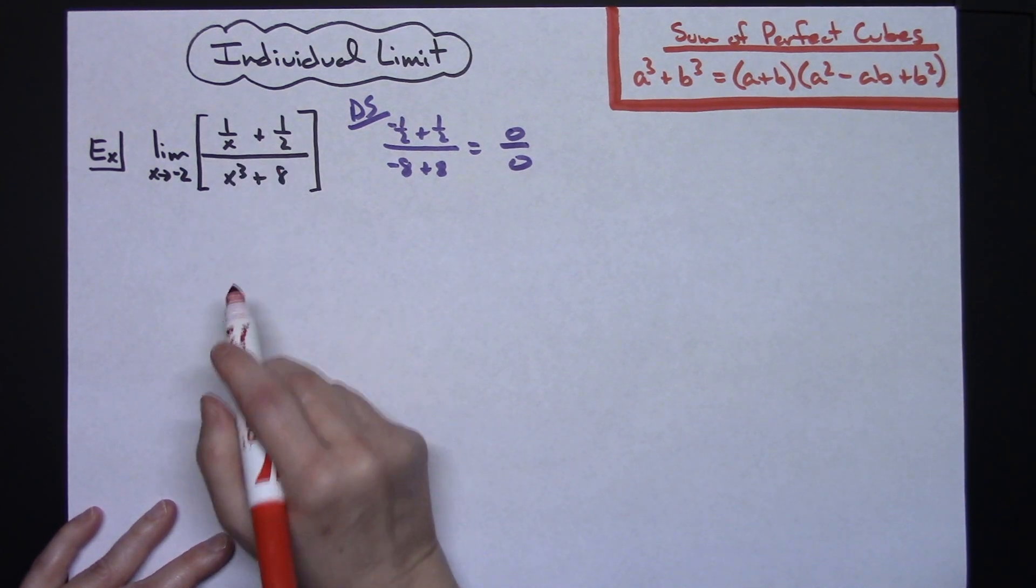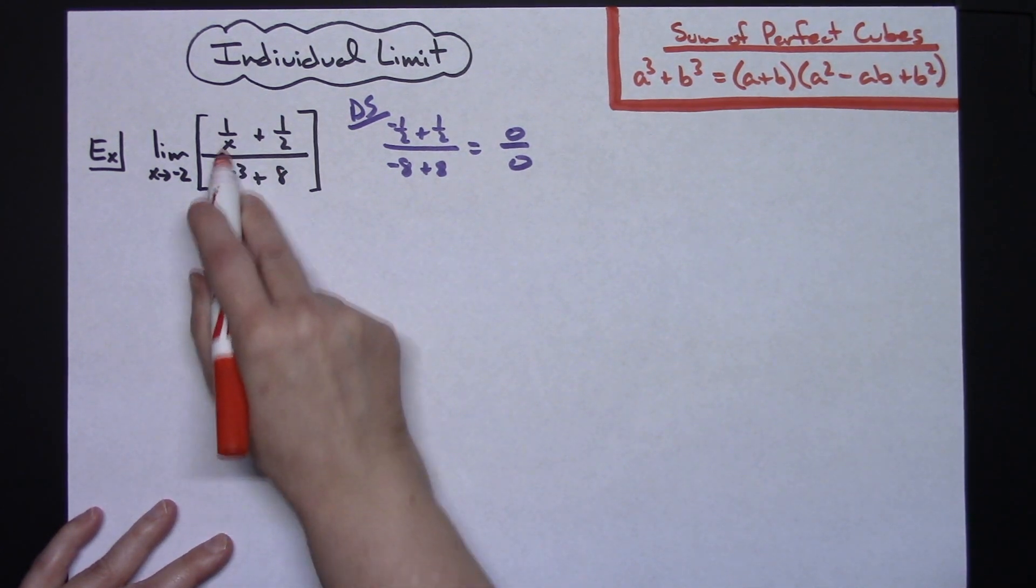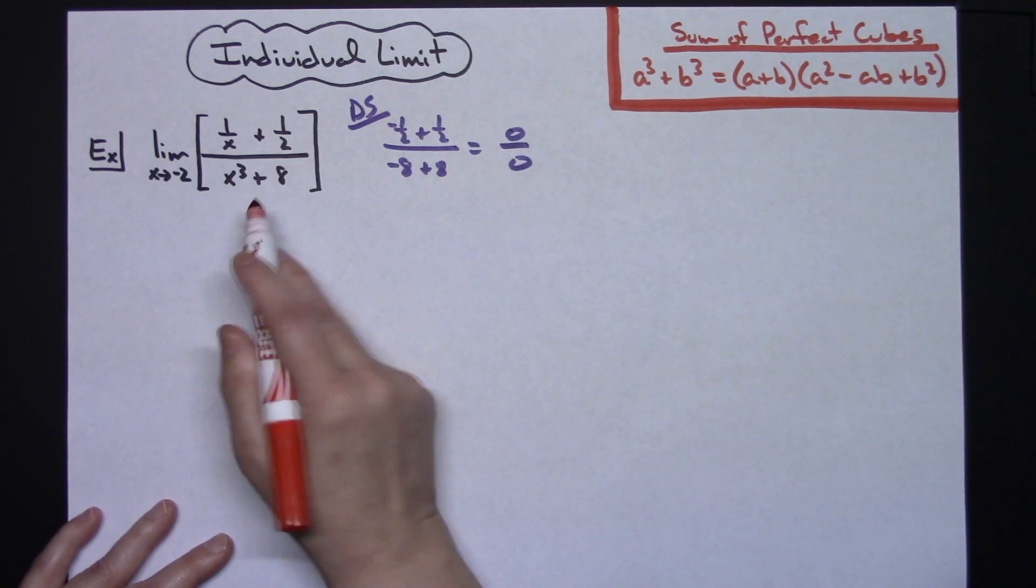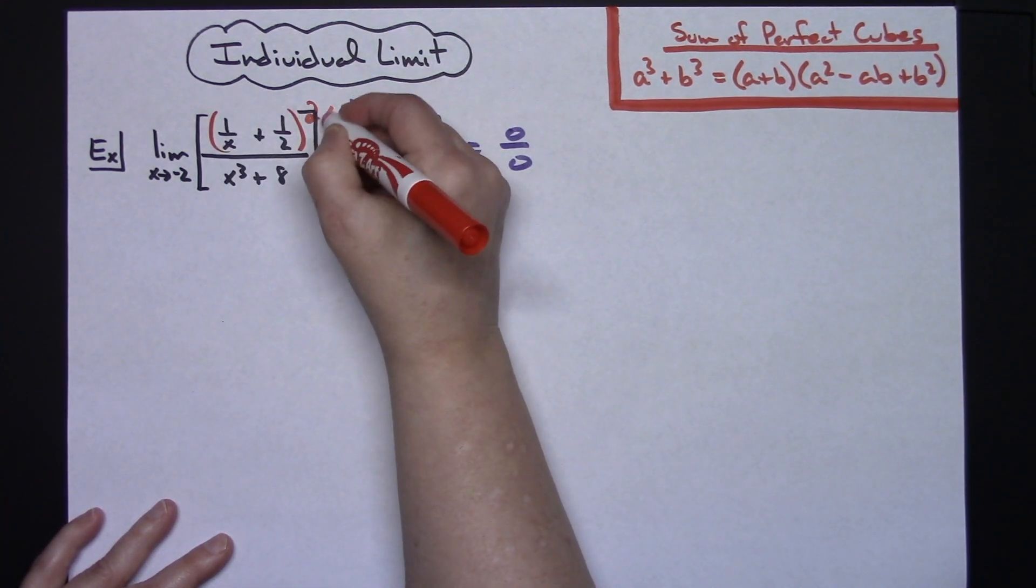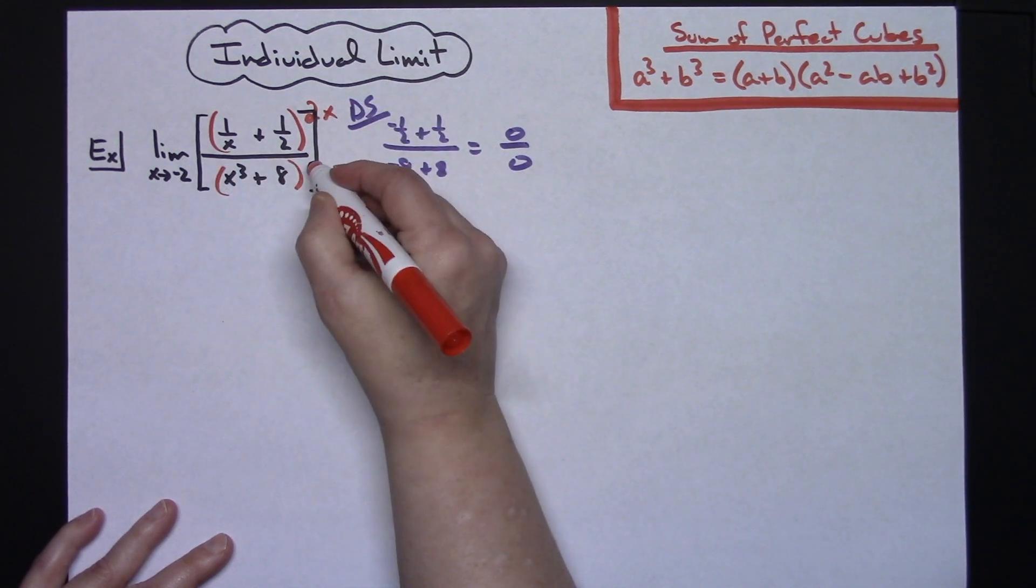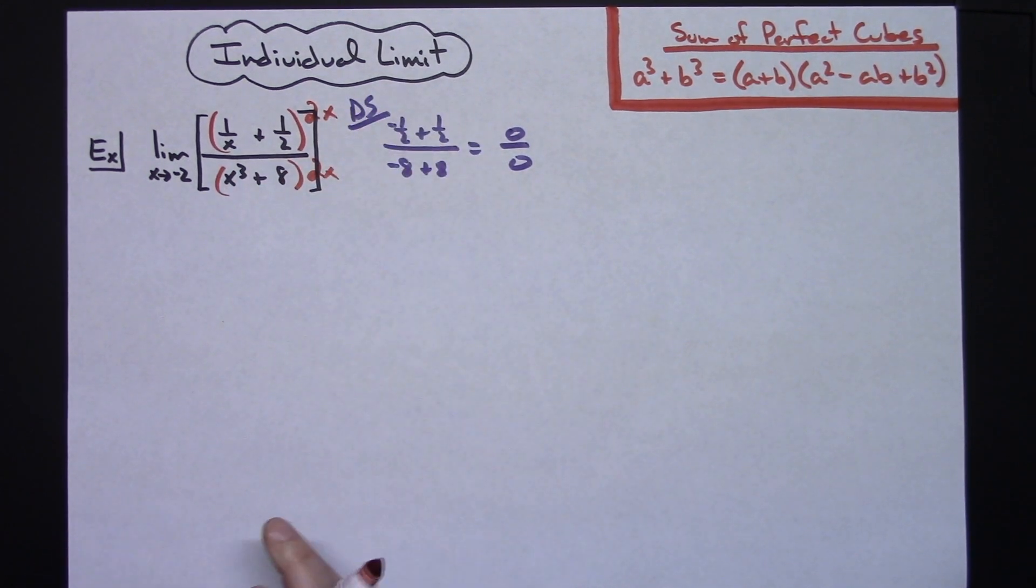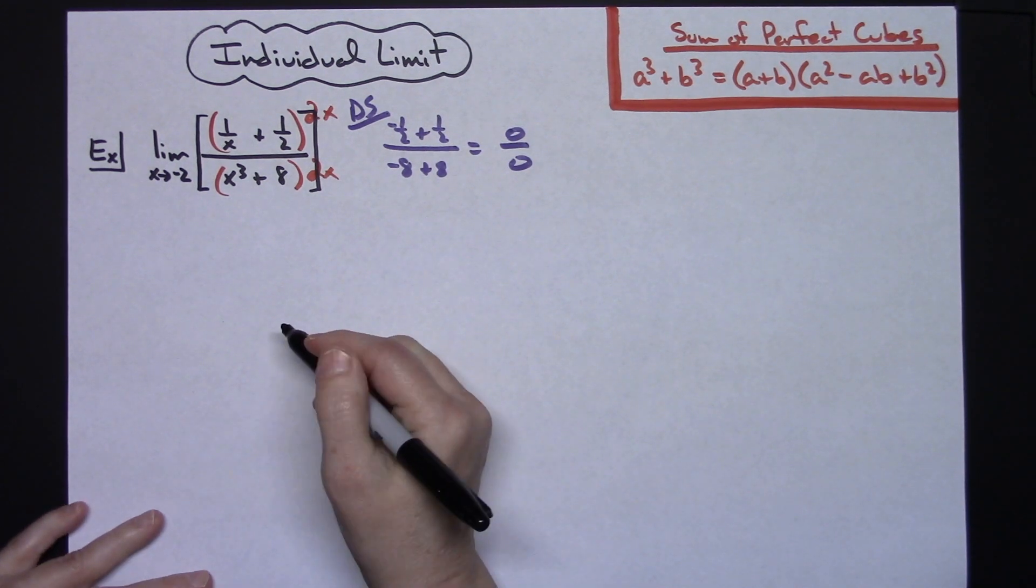I've got a denominator of x and 2 there; this denominator of the complex fraction is 1, so I don't have to worry about that. So I'm going to multiply my top by a 2x and I'm going to multiply the bottom by a 2x. Doing that as a form of 1 does not change my limit there at all.